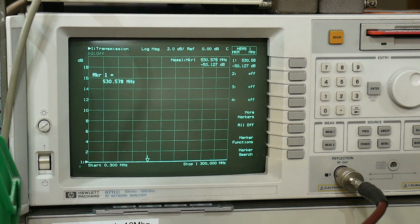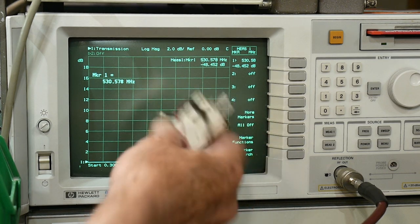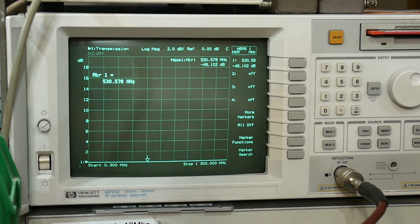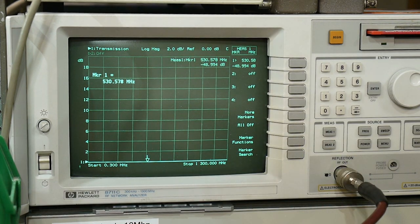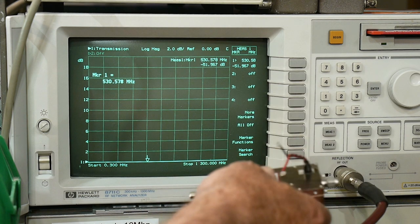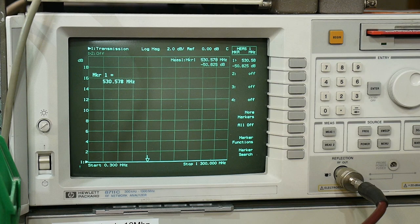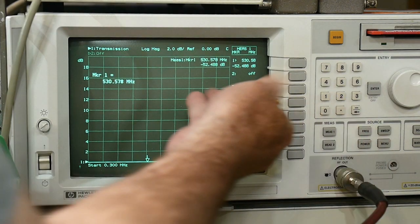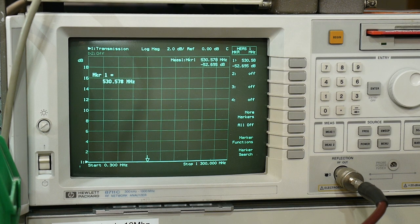So before you test an amplifier, there's a couple things you need to worry about. One is the output power of the amplifier blowing up your machine, and one is the output power of the machine blowing up your amplifier. So you need to have a small amount of power going into the amplifier and it's going to output a lot of power. The very first thing I'm going to do is put an attenuator on the output of the amplifier.